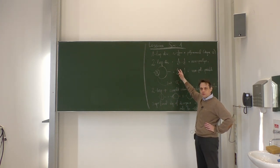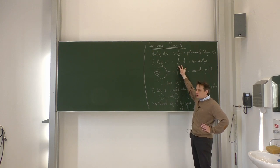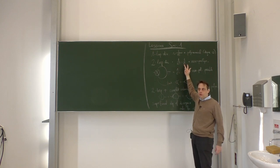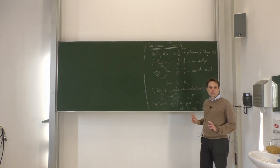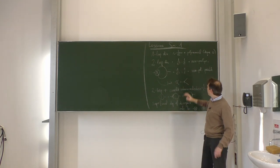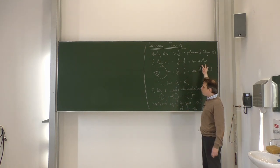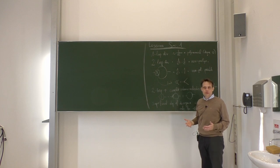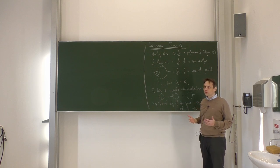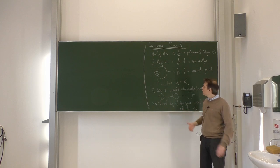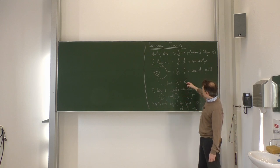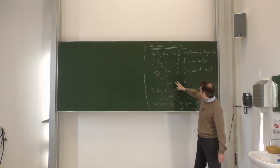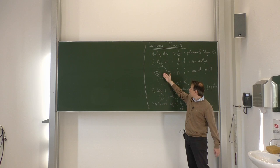If we go to the two-loop level, we encounter 1/ε² and 1/ε poles, but the coefficients are not always polynomials. They can be non-polynomial, and in position space that means non-local terms which cannot be written down in a Lagrangian.